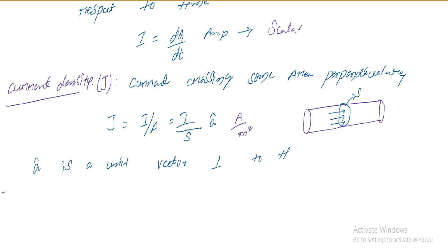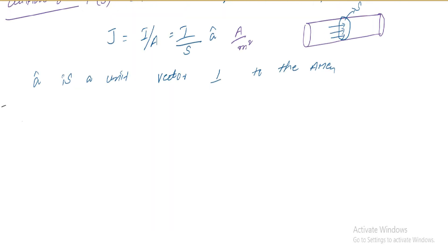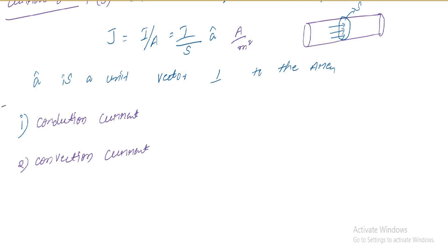So depending upon how current is passing, here we have three types of currents and related current densities. The first one is conduction current, the second one is convection current, and the third one is displacement current.